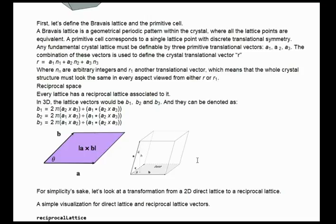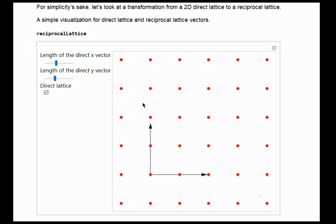By simplifying it, we can just get 2π over the height of our unit cell. Or we can put it in this way: the larger our direct lattice gets, the smaller in comparison our reciprocal lattice becomes. Another observation is that the reciprocal lattice of the reciprocal lattice is the direct lattice. But for simplicity's sake, let's look at a transformation from 2D direct lattice to a reciprocal lattice.